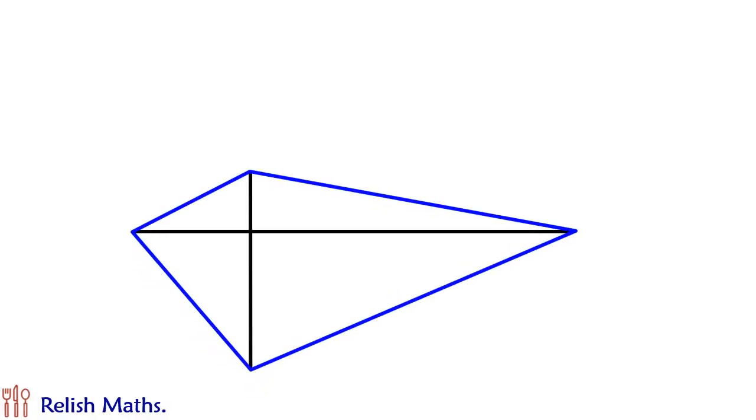We are given a quadrilateral ABCD. In this quadrilateral the diagonals are perpendicular to each other, that is it is an orthodiagonal quadrilateral.